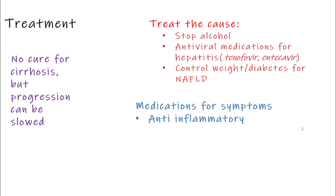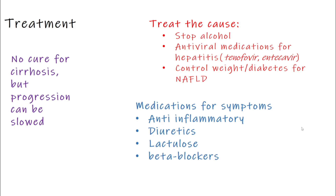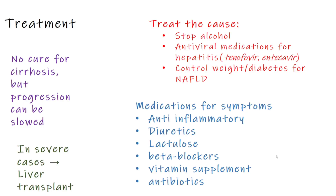For autoimmune diseases, medications like prednisolone help reduce inflammation. Diuretics like spironolactone are used to reduce swelling. Lactulose and sometimes rifaximin help treat confusion caused by toxin buildup — specifically hepatic encephalopathy. To reduce the risk of bleeding from varices, beta blockers like propranolol are used. Patients often need vitamin supplements like vitamin K, zinc, and B complex. Antibiotics may be given when needed, and in very advanced cases, a liver transplant might be the only option.